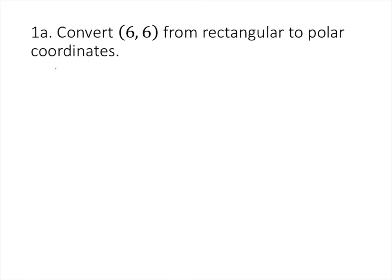When converting back and forth between rectangular coordinates (x, y) and polar coordinates (r, θ), the relationships we use are that r² = x² + y², and that tan(θ) = y/x.